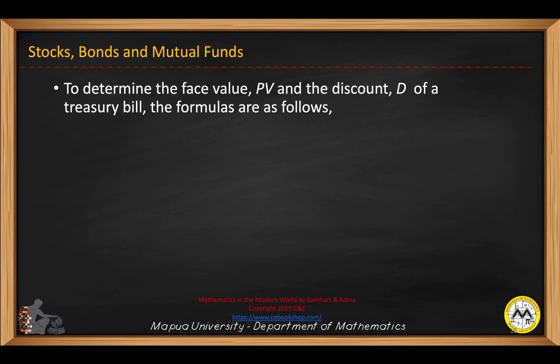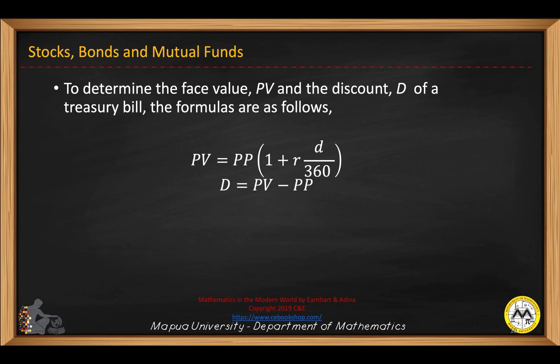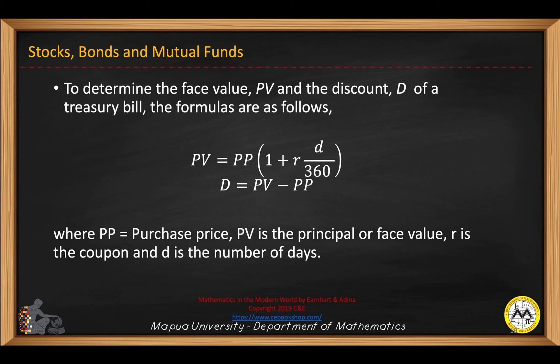To determine the face value, denoted by PV, and the discount D of a treasury bill, the formula is: the face value PV equals PP times the quantity (1 + R × number of days / 360), where D equals PV minus PP. Here, PP is the purchase price, PV is the principal value or face value, R is the coupon rate, and D is the number of days.